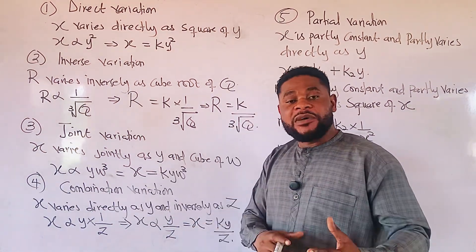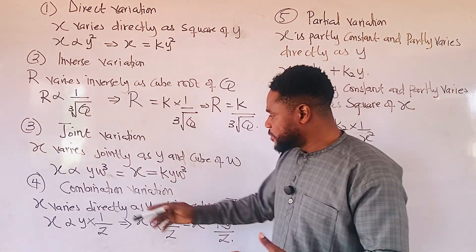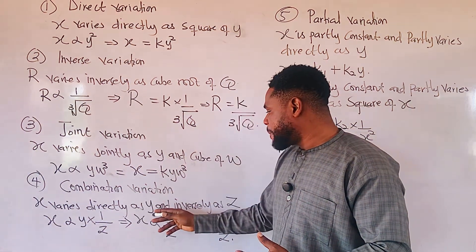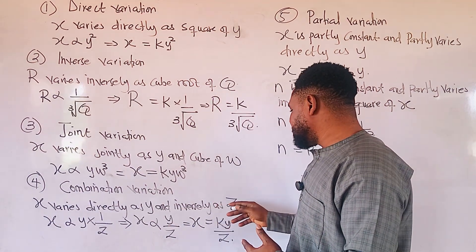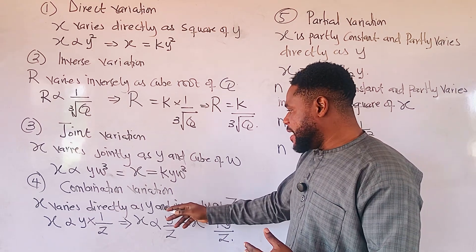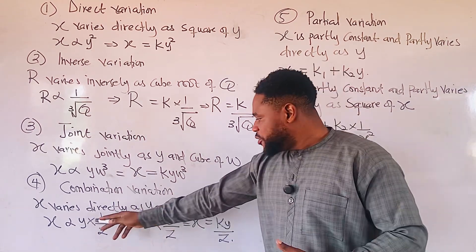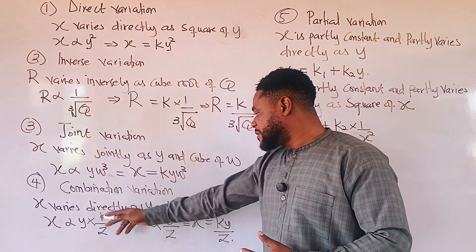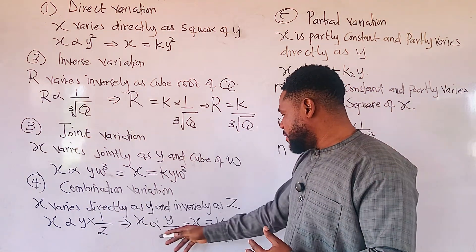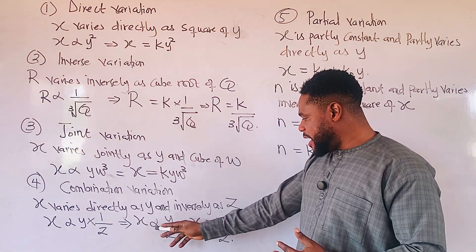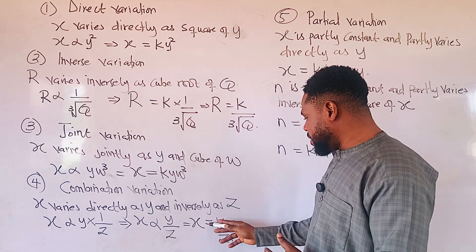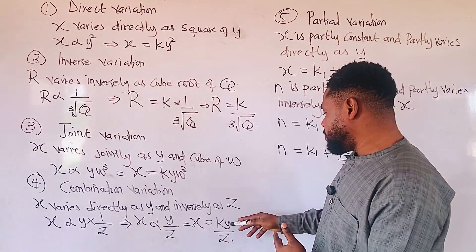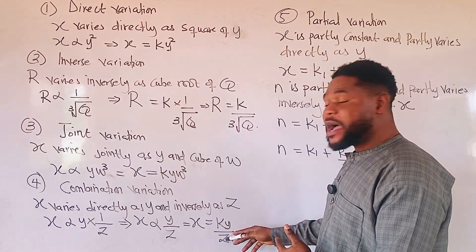The next step is combination variation, where we combine direct variation and inverse variation. x varies directly as y and inversely as z. The 'and' here in combination variation, we treat as multiplication. So you can see y multiplying the inverse of z, which is 1 over z. We change our variation sign to an equal sign, where we introduce our constant, which multiplies y divided by z.